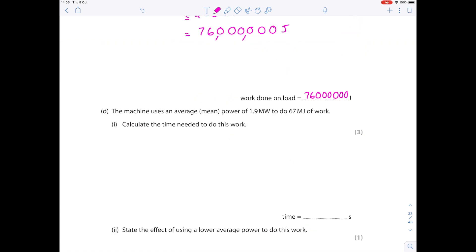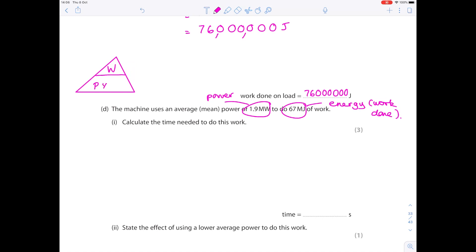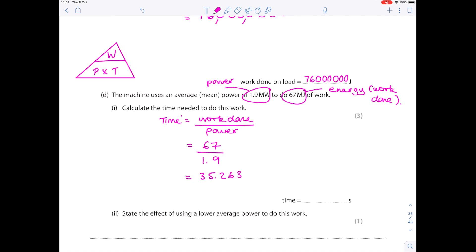The machine uses an average mean power of 1.9 megawatts to do 67 megajoules of work. Calculate the time needed to do this work. So we have a power value and we have an energy work done value. This is the formula triangle you're going to use this time. It's 'we play tennis' is how I remember it. We're after time so we need to do work done divided by power. Our work done I've already circled is 67 megajoules. Our power was 1.9 megawatts and therefore our time is 35.263. Notice that because the units are both in terms of mega they just cancel each other out so we didn't need to write very long numbers here. So our final answer here is 35.3 seconds to three significant figures.